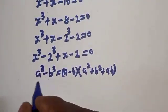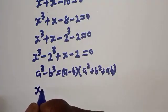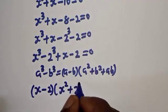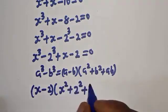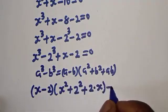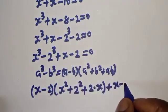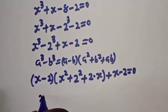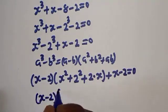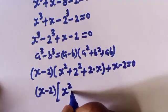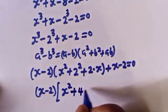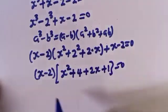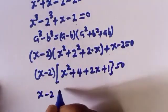Then this is s minus 2, bracket, s squared plus 2 squared plus 2 multiplied by s, plus s minus 2, is equal to 0. Then s minus 2 is common here. We have s minus 2 bracket s squared plus 4 plus 2s, plus 1, is equal to 0.